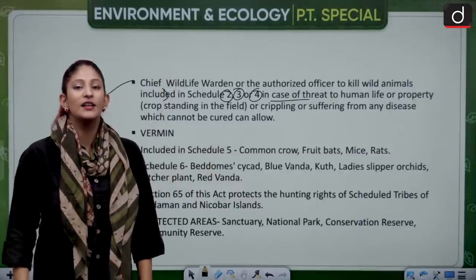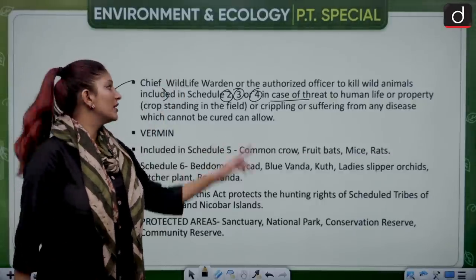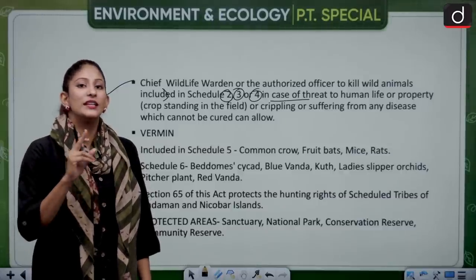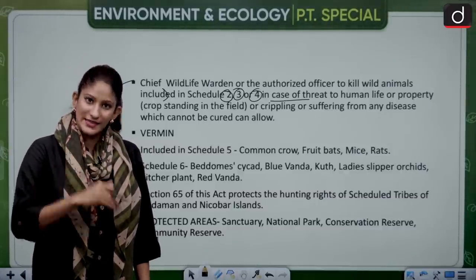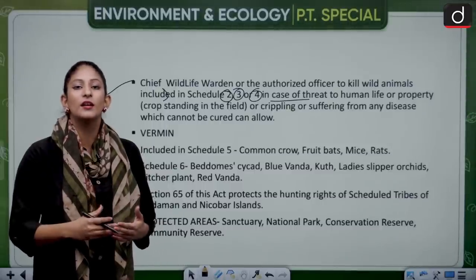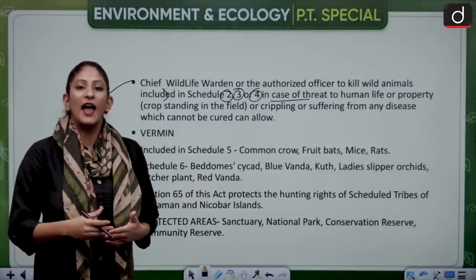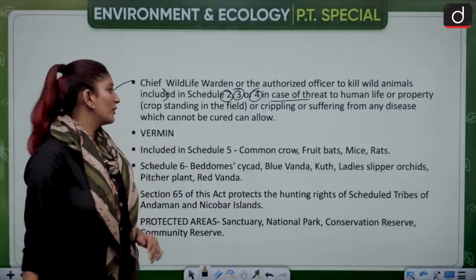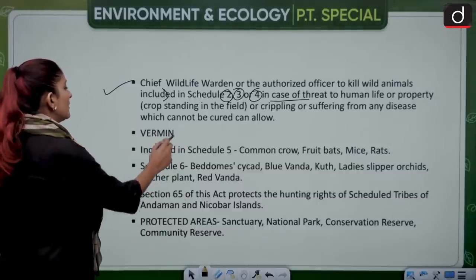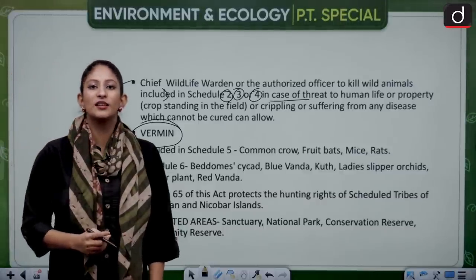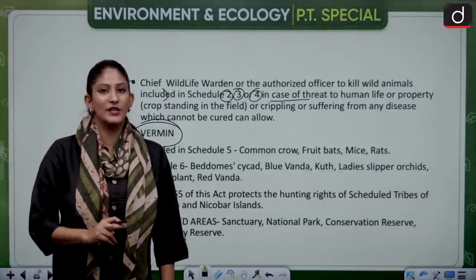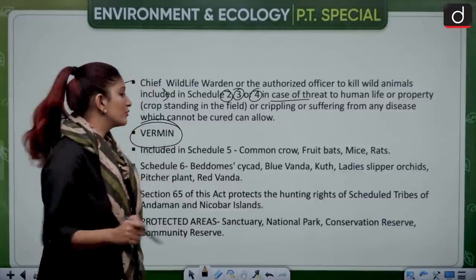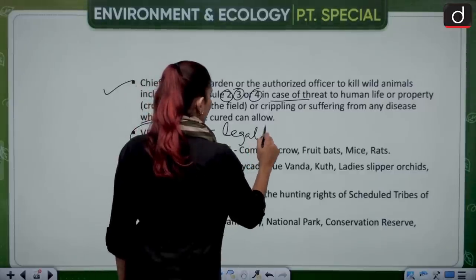If any animal under Schedule 2, 3, or 4 poses a threat to standing crops, or is suffering from disability, has been crippled, or has an incurable disease, then it can be killed — it's like a mercy killing. Vermins are animals posing a threat to any specific region and, according to the government, can be hunted and killed — this is also known as legal hunting.